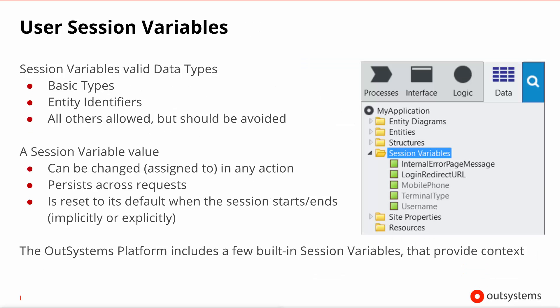You can create and manage your session variables in the data tab. These variables can be of basic types, entity identifiers, and all other types including record, but you should avoid those because of performance considerations. A session variable can be assigned anywhere because it's globally visible, and it persists across requests for that same user. Be careful that upon a session end, these variables will reset their value to the default value. The OutSystems platform already provides a few built-in session variables, which you can see on the screenshot as grayed out.